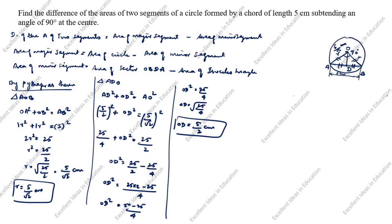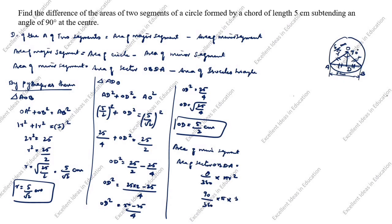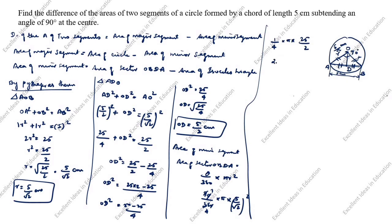Next, we will find the area of minor segment. The formula for area of minor segment is area of sector OBDA minus area of isosceles triangle. Area of sector OBDA = theta/360 × pi × R². So 90/360 × pi × (5/root 2)² = 1/4 × pi × 25/2 = 25 pi by 8 centimeter square. This is the area of sector OBDA.